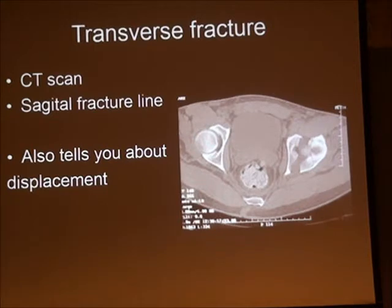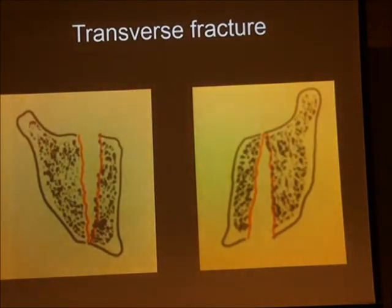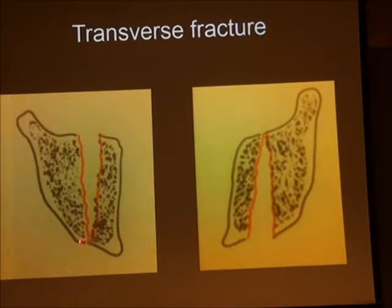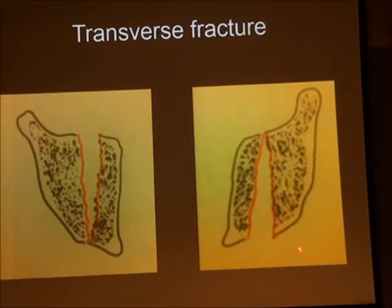The CT scan also tells you about displacement — whether it is anterior or posterior. A schematic shows that where there is a hinge posteriorly with anterior opening, an anterior approach may be worthwhile to directly see and reduce that fracture site. Coming from the back, you'd find the intact hinge and essentially an undisplaced or minimally displaced fracture — the wrong end. Conversely, where the fracture opens posteriorly, a posterior approach is preferred to clear, reduce, and hold the fracture site.